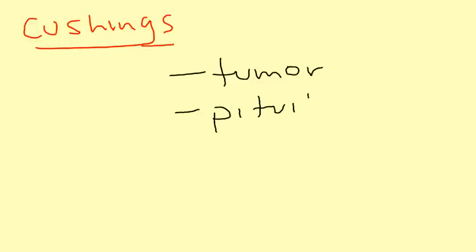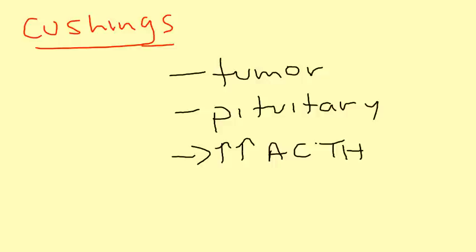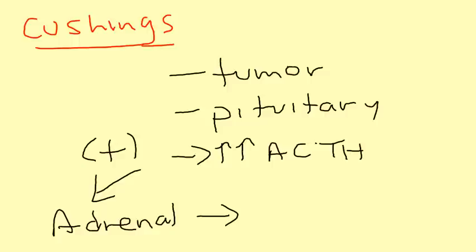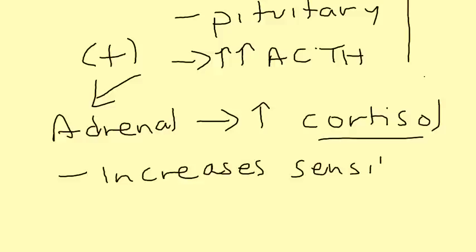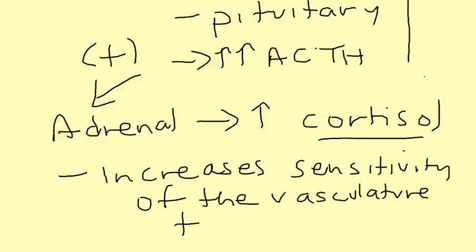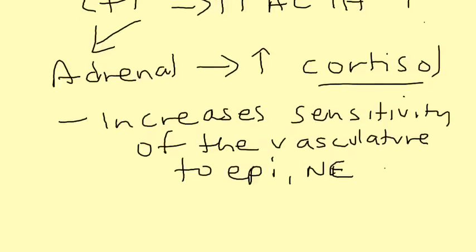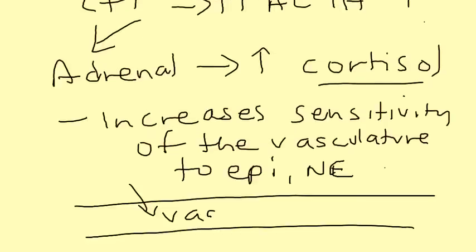Cushing's disease is a tumor in the pituitary gland. The tumor produces a lot of ACTH, which is a hormone normally produced by the pituitary. ACTH stimulates the adrenal gland to produce cortisol. Cortisol increases the sensitivity of the vasculature to epinephrine and norepinephrine, which cause vasoconstriction. Vasoconstriction — decreasing the diameter of the artery — directly leads to increased blood pressure.